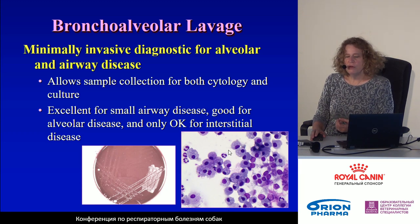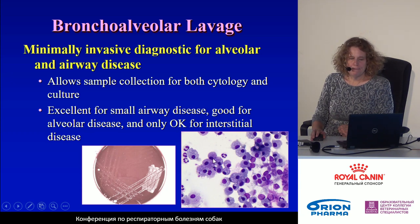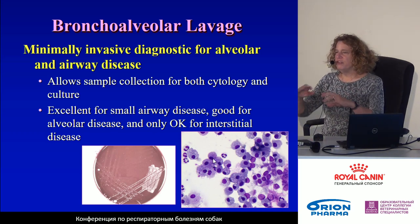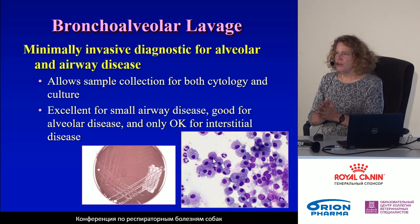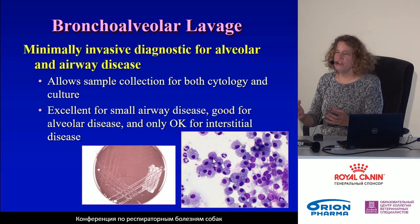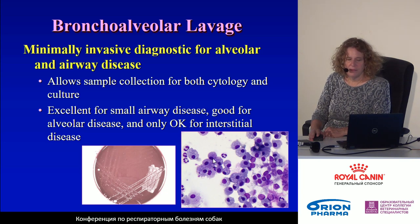BAL is very good for recognizing types of inflammation, recognizing neoplastic cells, recognizing infectious organisms. However, if we're dealing with an interstitial disease — the tissues between the alveoli — the yield is not as good. Bronchoalveolar lavage cannot show us architectural changes in the lungs or something like fibrosis; it cannot diagnose pulmonary fibrosis, for example.